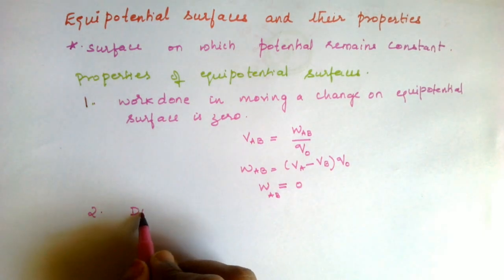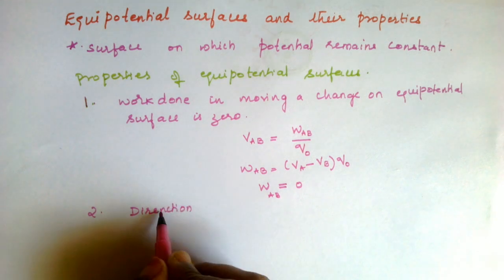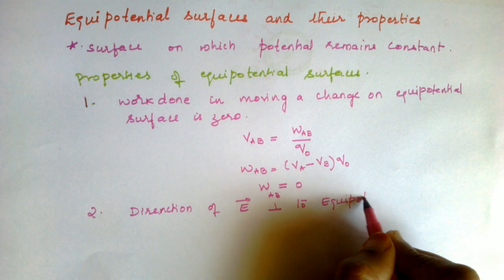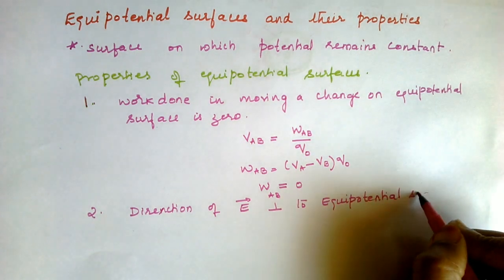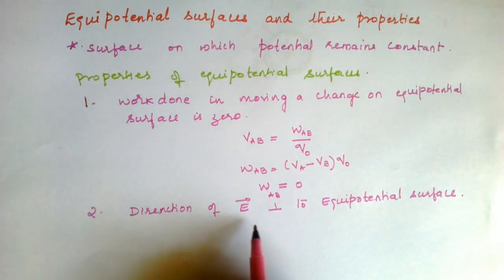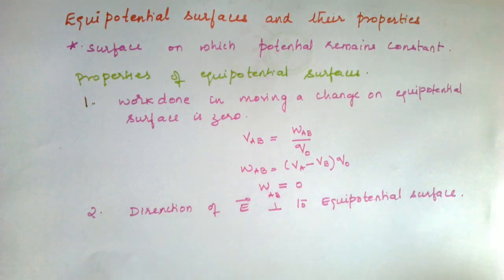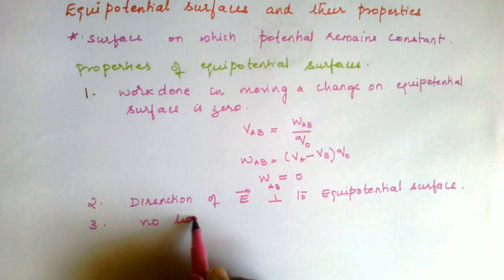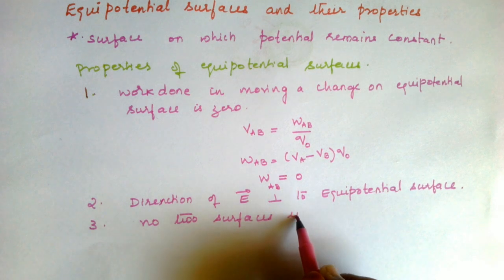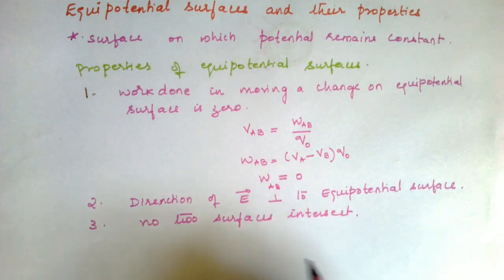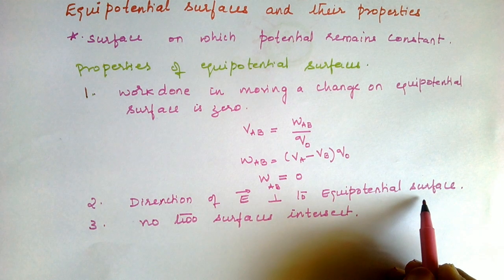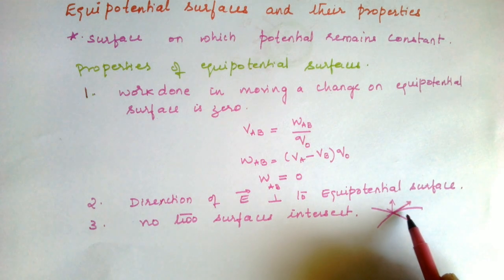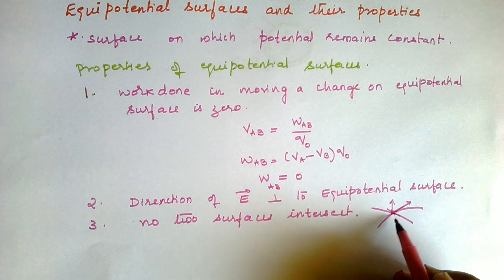The second property: the direction of electric field is always perpendicular to an equipotential surface. The third property: no two equipotential surfaces intersect each other. The reason is that if two surfaces intersected, there would be two directions for the electric field at the same point, which is impossible.